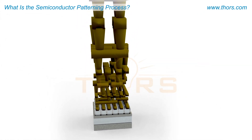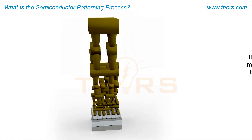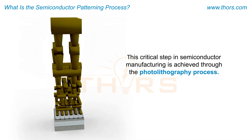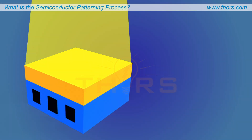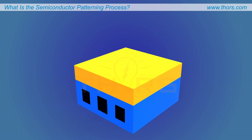This critical step in semiconductor manufacturing is achieved through the photolithography process. Photolithography is the process of exposing light through a reticle or template, which bears the circuit pattern, to transfer a pattern from a reticle to a substrate.